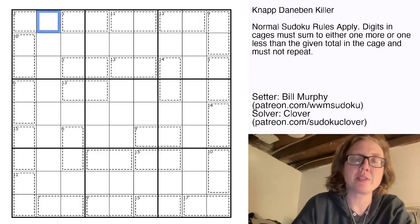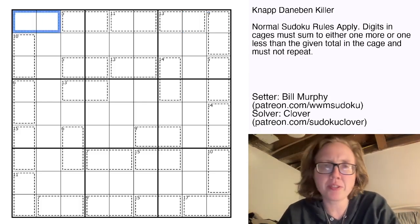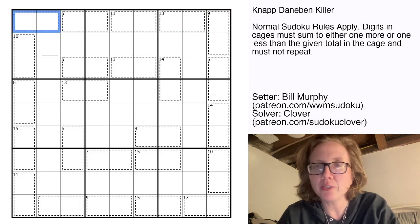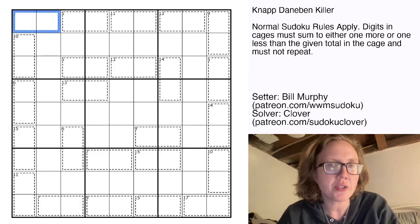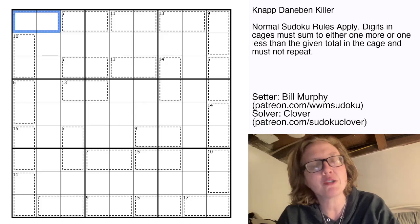We also have some cages in the grid. Typically in killer Sudoku, the clue written in the top left corner of the cage tells you the sum of the numbers in that cage, which may not repeat.